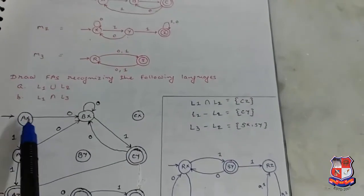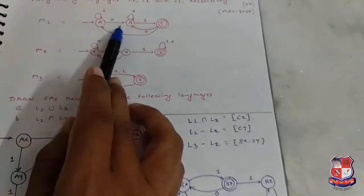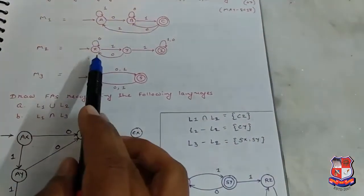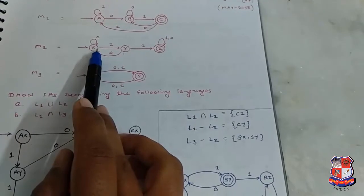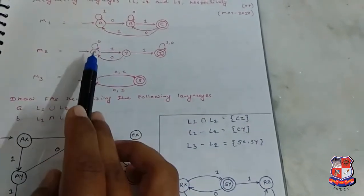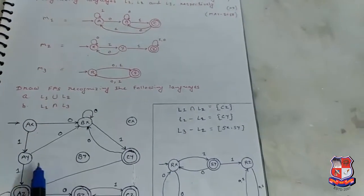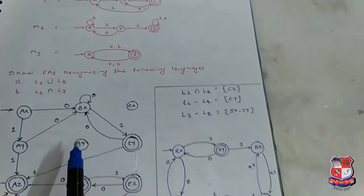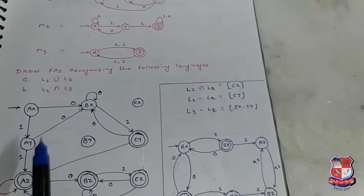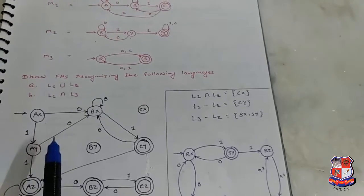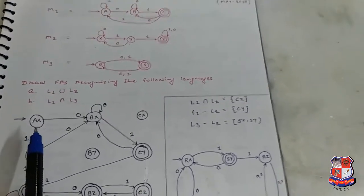For A X on input 0: A goes to state B and X goes to state X, so A X on 0 goes to state B X.